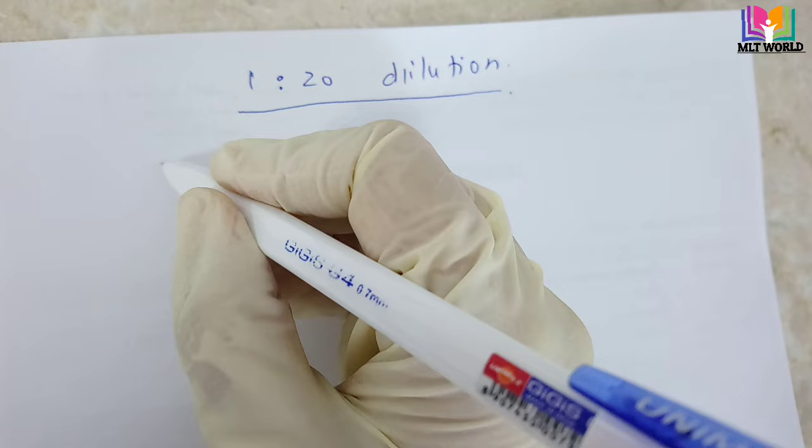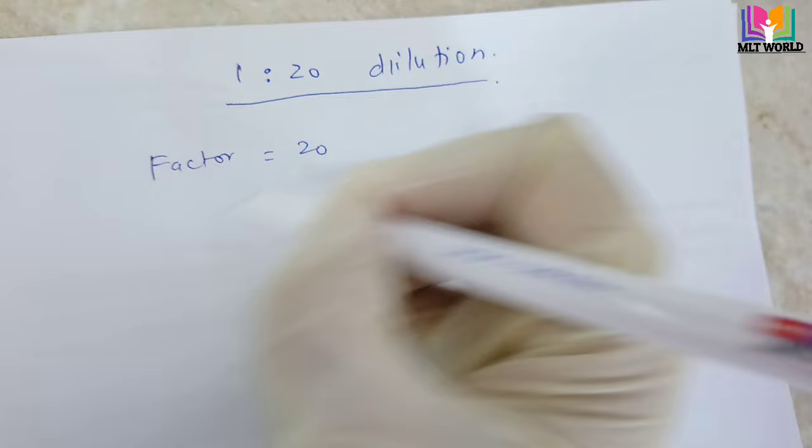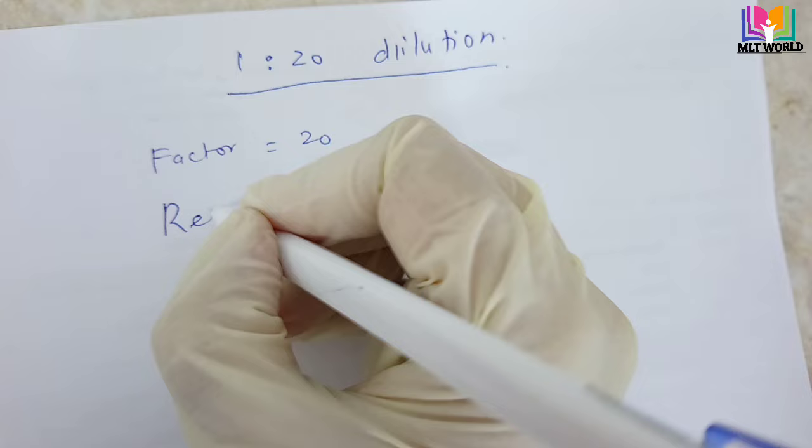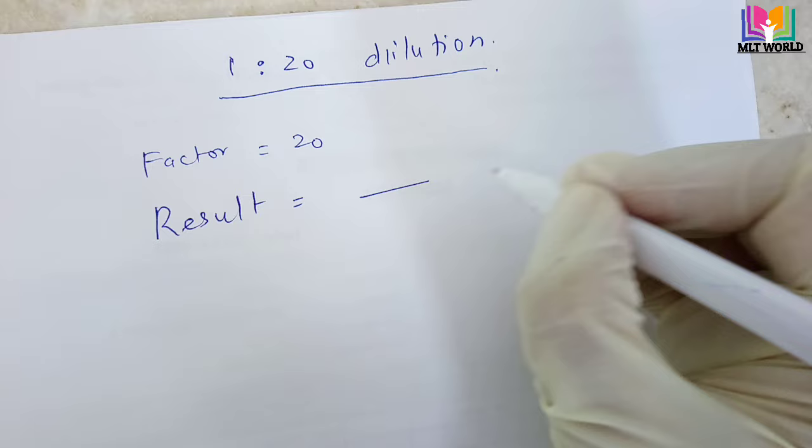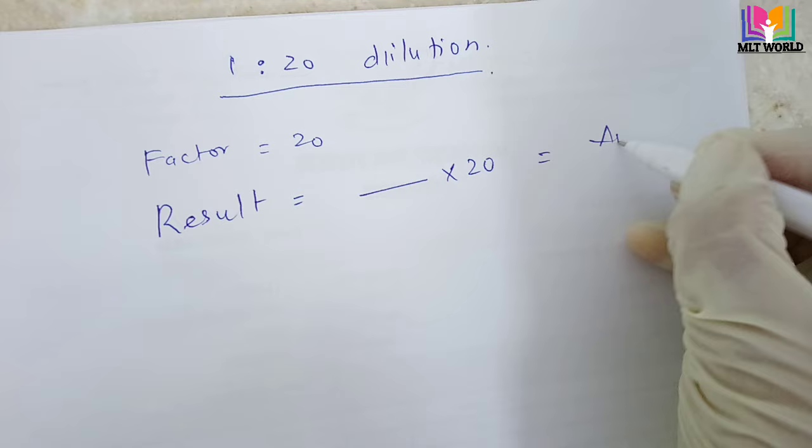First of all, 1 is to 20 dilution means the factor we are using in this dilution is 20. So whatever result we will get, we will multiply the result with 20, then we will get the actual answer.